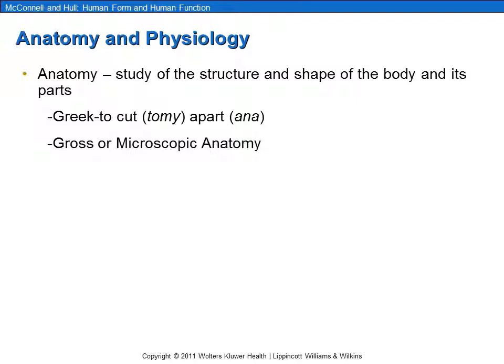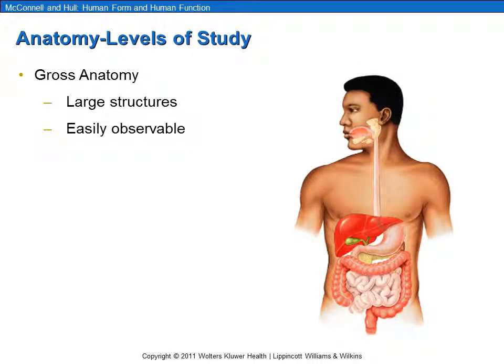We can talk about anatomy in terms of gross anatomy or microscopic anatomy. Gross anatomy refers to describing or observing the shape and form of large structures — structures that can easily be seen with the naked eye, not requiring any type of magnification, such as the shape or structure of the ear or the nose, or internal organs like the liver, intestines, or the stomach.